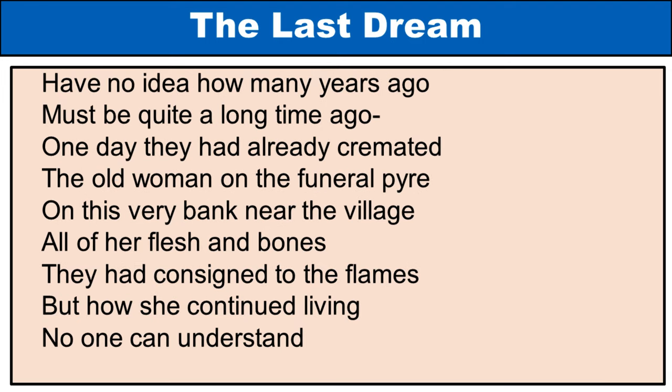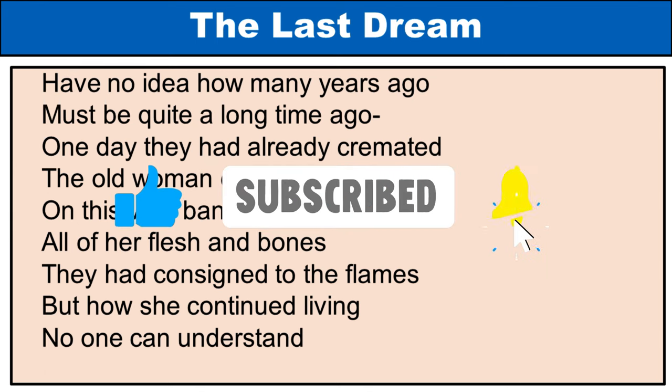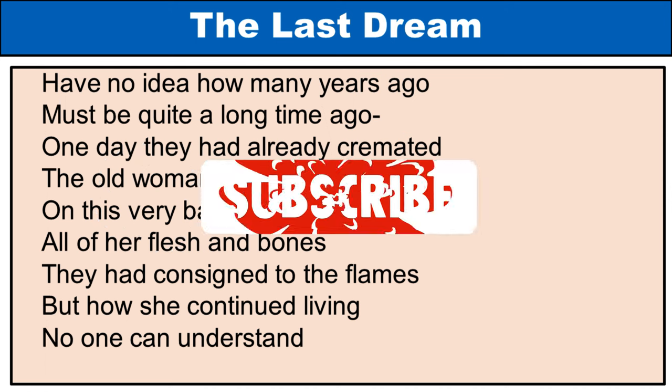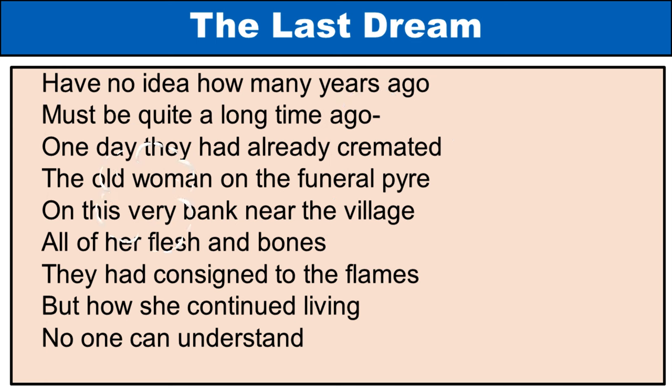Poem lines: 'Have no idea how many years ago. Must be quite a long time ago. One day they had already cremated the old woman on the funeral pyre on this very bank near the village. All of her flesh and bones they had consigned to the flames. But how she continued living, no one can understand.' Explanation: They do not know when this happened, but very long ago they had already cremated the old woman, burning her flesh and bones completely — but now they are seeing her again. The villagers cremated the old woman believing she was dead, but she has somehow returned, which is ironic. The old woman symbolizes mystery.